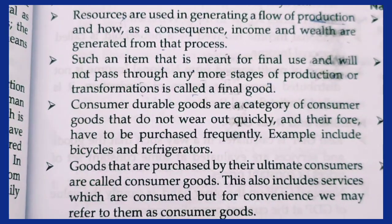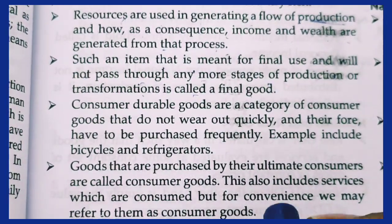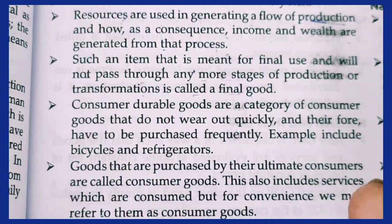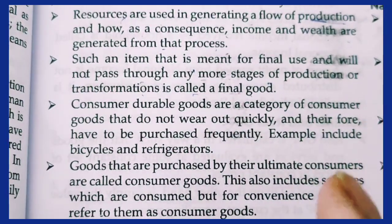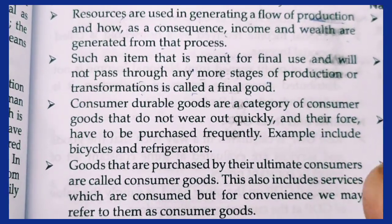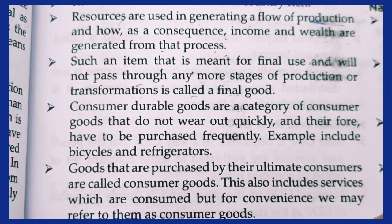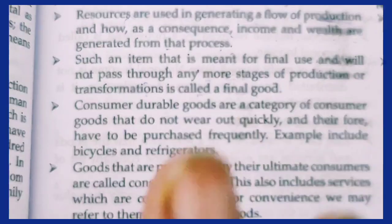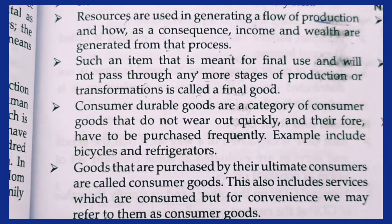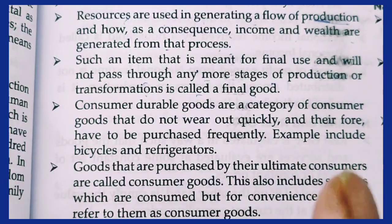A fridge, for instance, may last 10 years before needing replacement — that is what 'durable' means, a long useful life. Similarly, goods like a TV and furniture are also understood as fixed assets in this category.